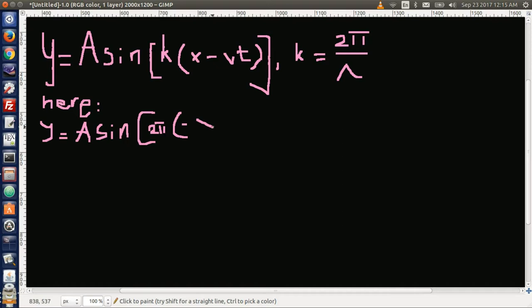x over lambda, and then plus little t over the big T, the period.